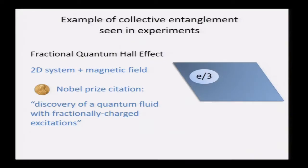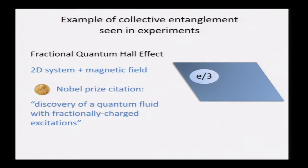One known experimental example is the fractional quantum Hall effect. The quantum Hall effect means you take a 2D system, put it in a very strong magnetic field, and if it's sufficiently clean with particular magnetic field values, you find — quoting from the Nobel Prize citation — a quantum fluid with fractionally charged excitations. You have a system of electrons, each with charge E. But because they get entangled, one manifestation of that crazy quantum phenomenon is that the excitations have a charge that is a fraction of the electron charge, like one third.